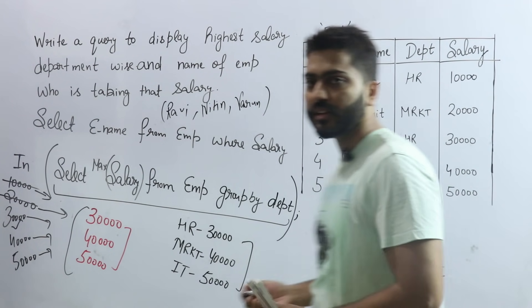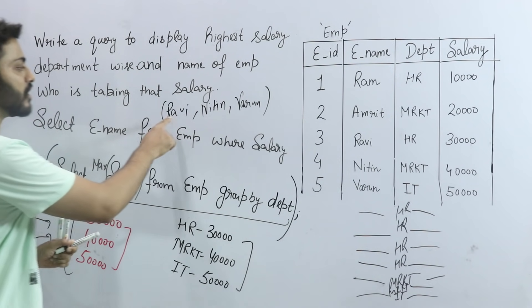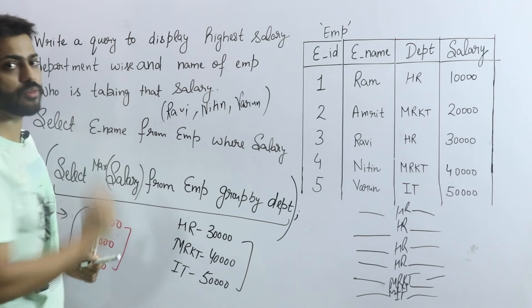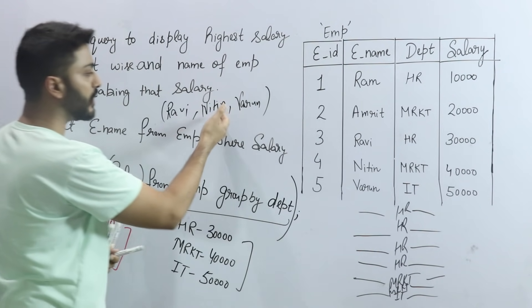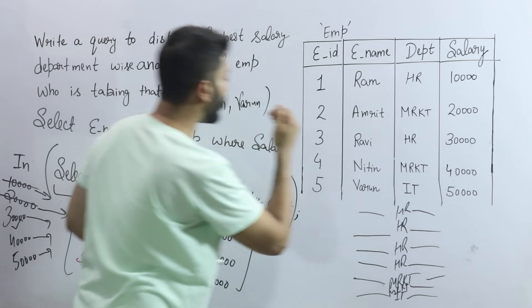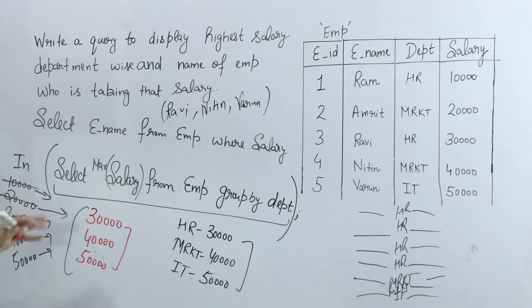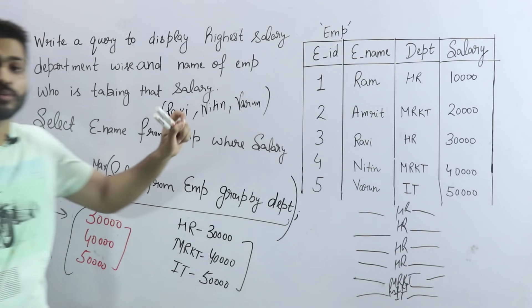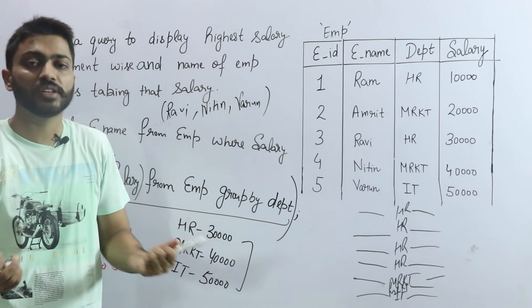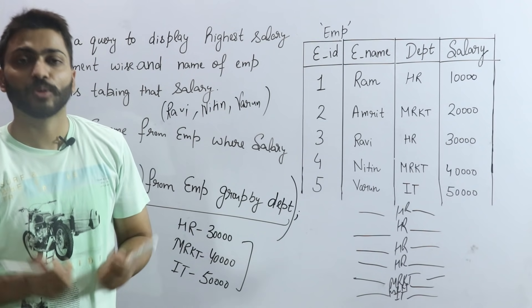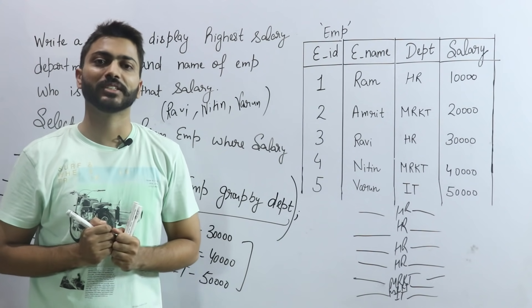Final output होगा: Ravi, Nitin, and Varun. Ravi HR में highest salary ले रहा है, Nitin marketing में, और Varun IT में। So this is how we solve the subquery to find the highest salary department-wise and the name of the employee taking that salary. अगर आपको यह वीडियो पसंद आई तो please like करें, share करें, और channel subscribe करें। Thank you.